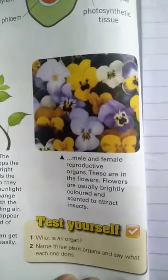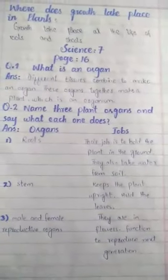Question number one is: What is an organ? And question number two is: Name three plant organs and say what each one does.